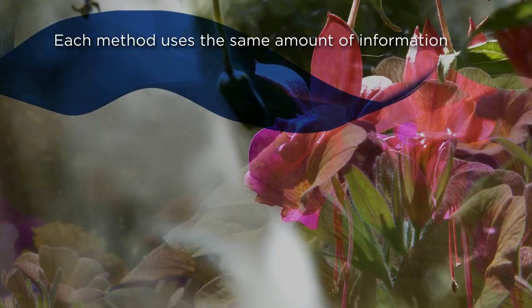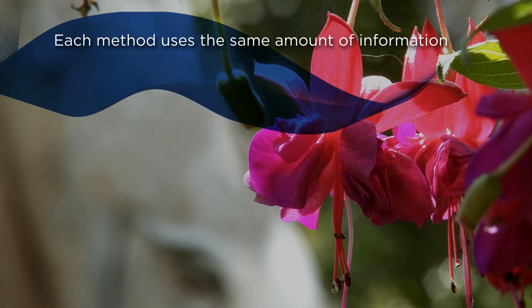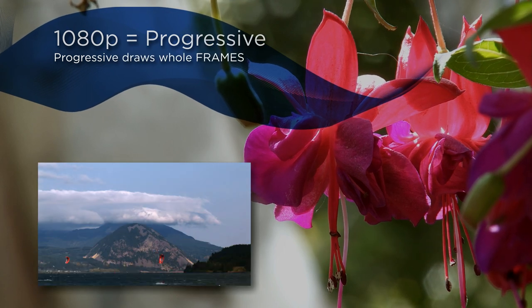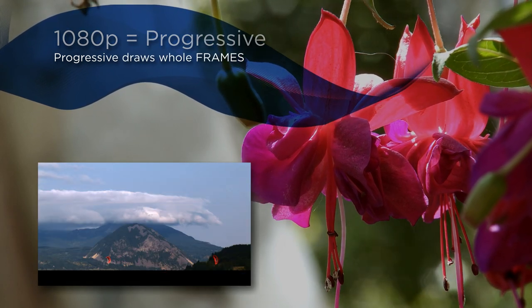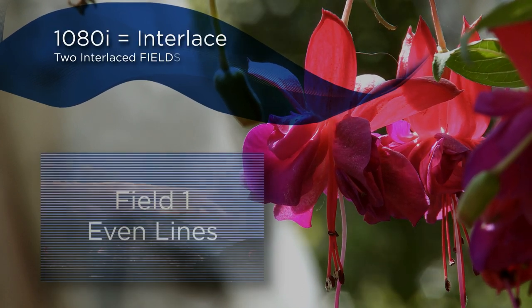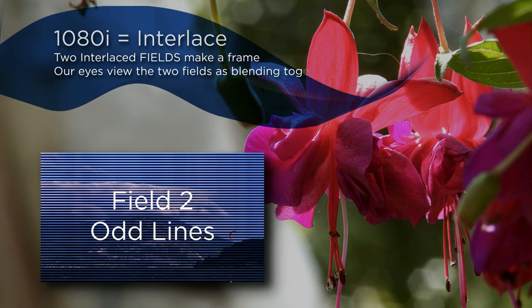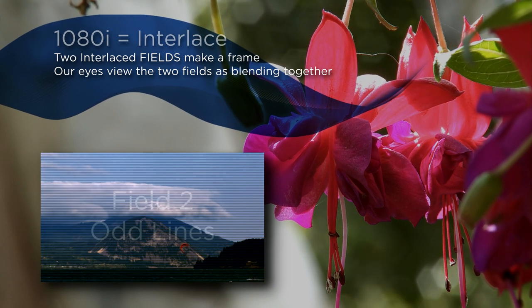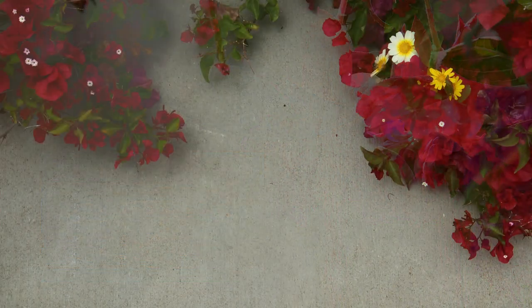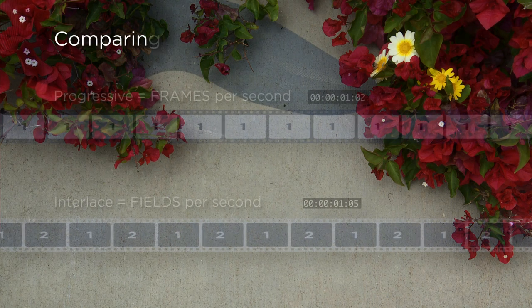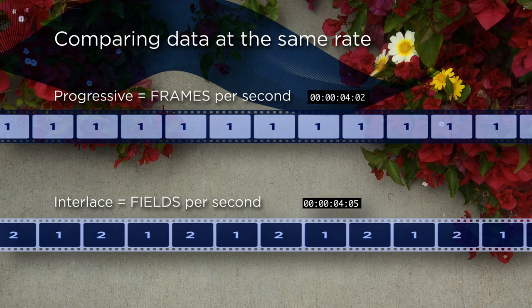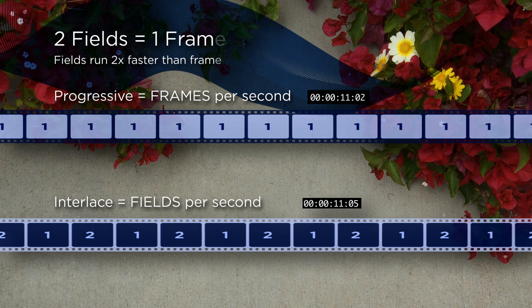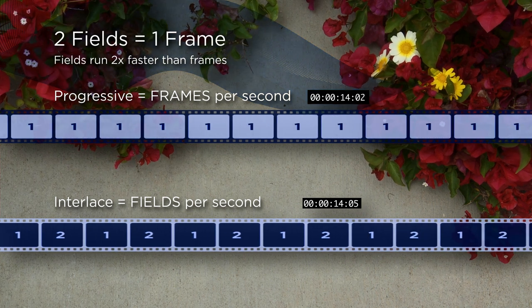The two methods work with the same amount of source information but handle it in different ways. When compared at the same frame rates, there is often a misconception that interlaced images contain half the data compared to progressive images. This is simply not true. The amount of information is the same — only the method of displaying it is different.